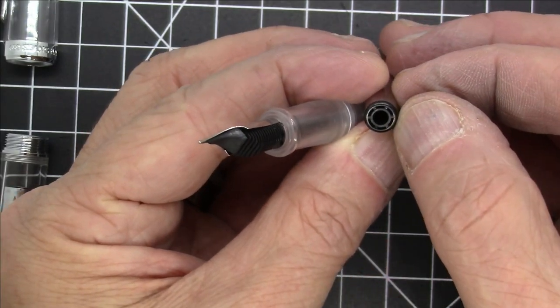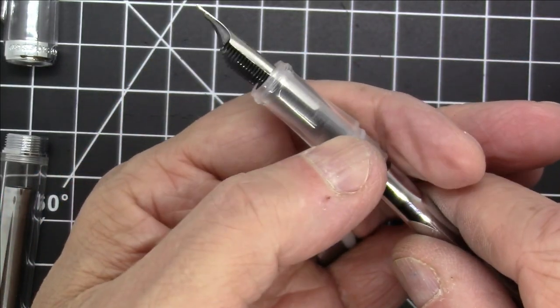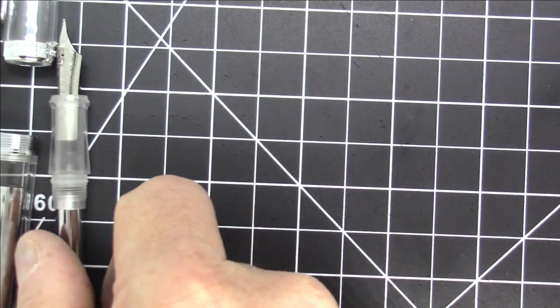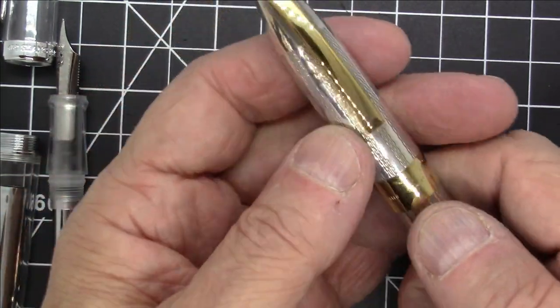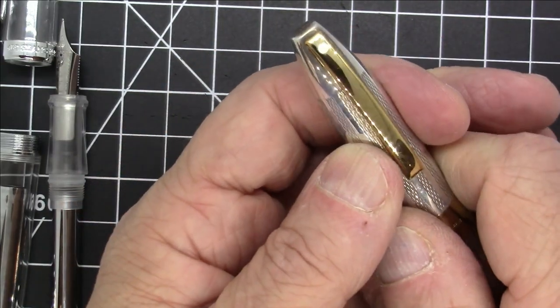This is removable, so this is sort of a self-contained unit which is a sleeve with an integrated sack built in, and then it makes a seal on the top. This is identical to a system that Sheaffer had as well.